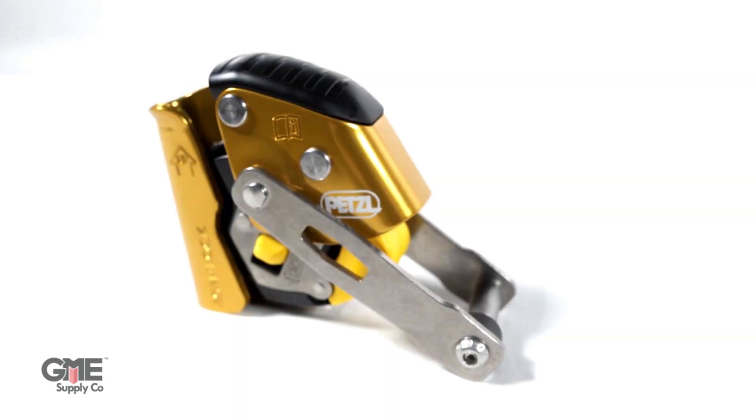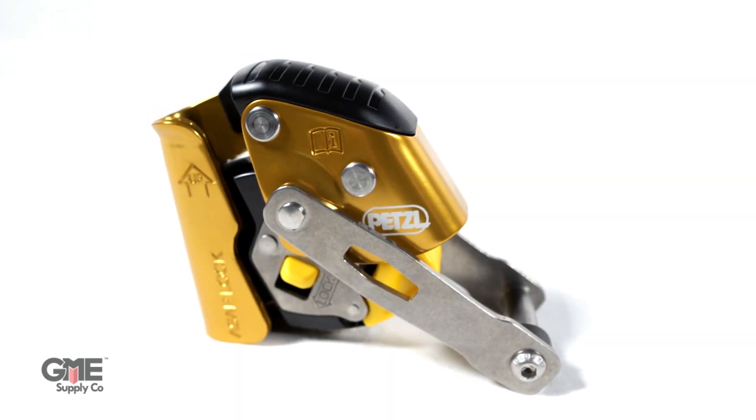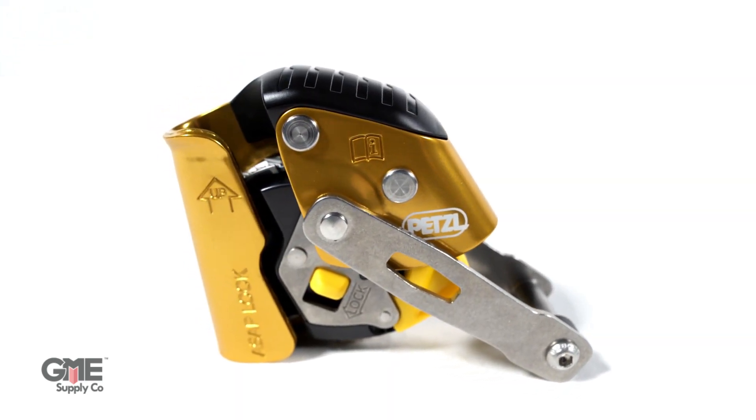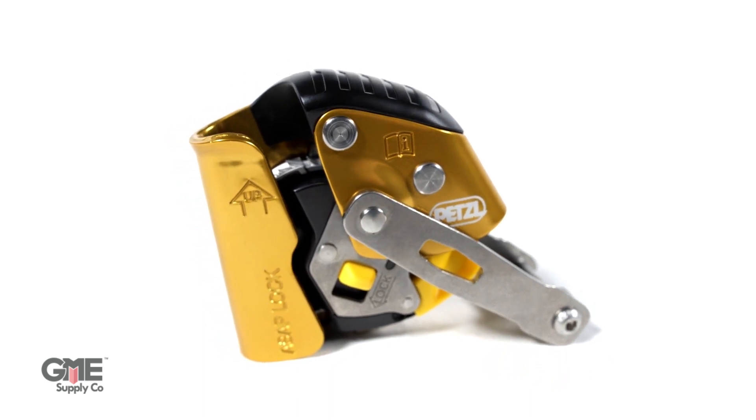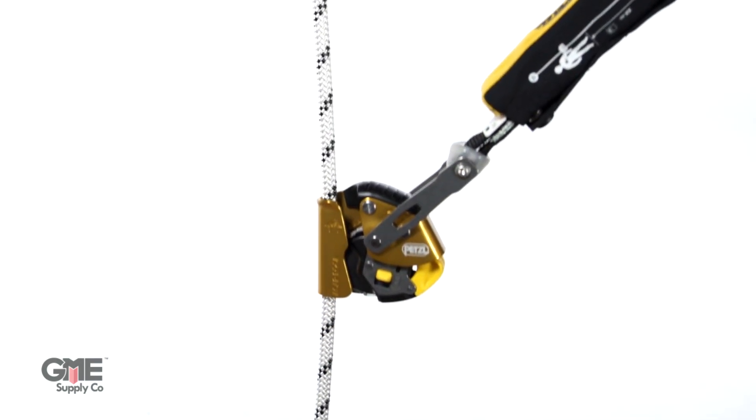To begin with, we have Petzl's ASAP Lock Mobile Fall Arrester. This device is wildly popular in many industries, telecom, wind energy, window washing, just to name a few, because of how smoothly it travels up and down the rope.